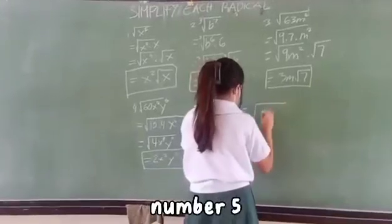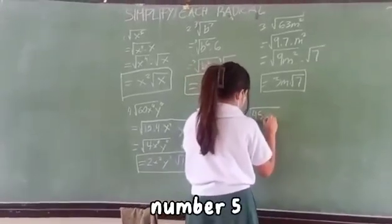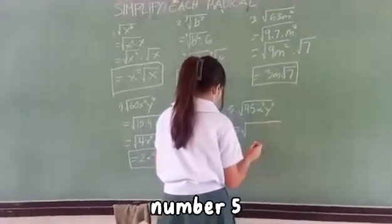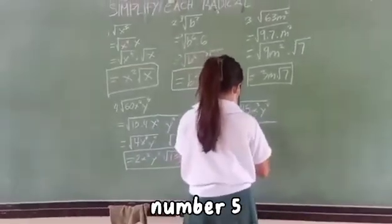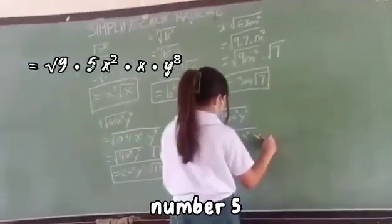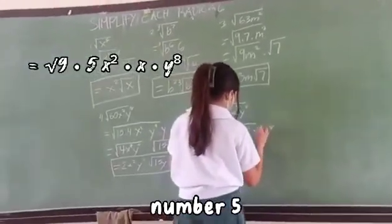Number five: 45X cubed Y to the eighth power. Unmultiply 45 into 9 times 5. The X cubed borrows the extra X. Just like before, number four, switch positions. 5X can't be square rooted.